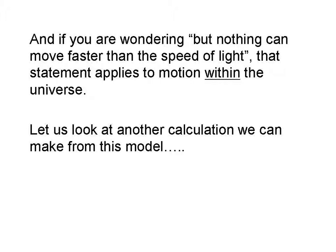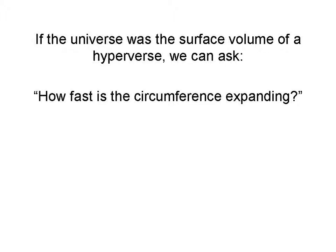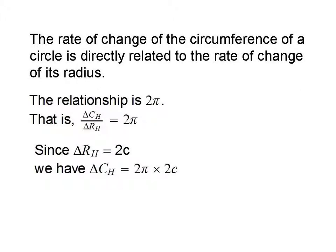Let us look at another calculation we can make from the model, and this is the one that gives us the Hubble constant. Now if the universe was the surface volume of a hyperverse, we can ask: how fast is the circumference expanding? The rate of change of the circumference of a circle is directly related to the rate of change of its radius, and that relationship is 2 pi. That is, if we take delta c sub h — the rate of change of the circumference of the hyperverse — and divide it by the rate of change of the radius, delta r sub h, we get 2 pi.